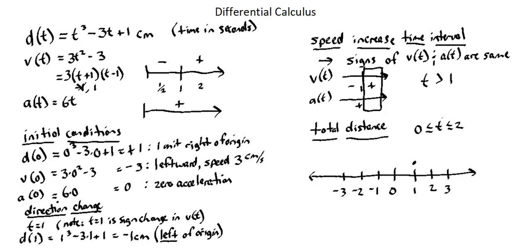I'll start at the displacement input of 0, which gives an output of 1 — so I'm 1 unit to the right of the origin. Now, I have a critical point when I change direction. From 0 to 1 second my velocity is negative, so I'm going left. At 1 second I change direction, so I need to know my location: the displacement function with input 1 gives negative 1 centimeter, meaning I'm 1 centimeter left of the origin.